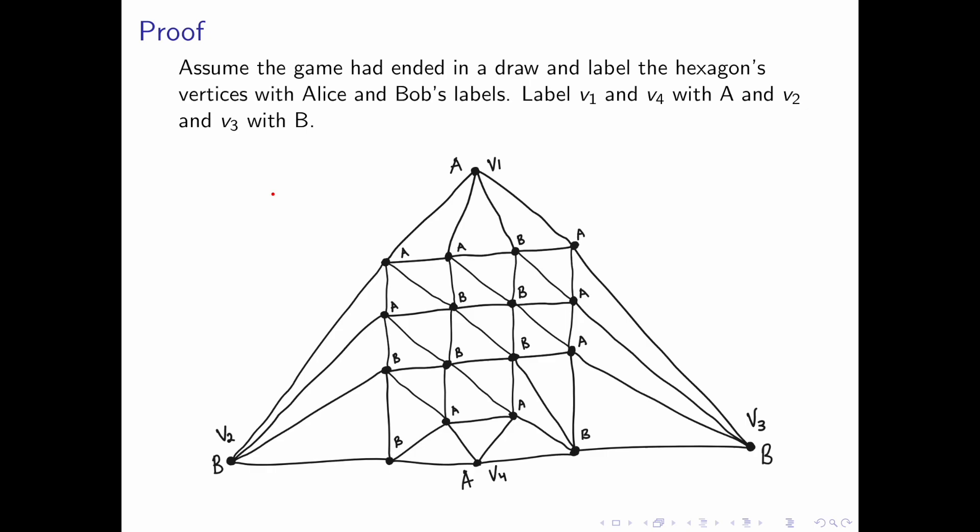We will label v1 and v4 with A because those are the sides that correspond to Alice, and v2 and v3 with B because those are the sides corresponding with Bob. A win for Alice corresponds to a path from v1 to v4 with all vertices labeled A. Similarly for Bob, a win is a path from v2 to v3 with all vertices labeled B.